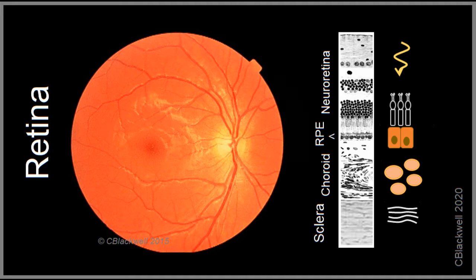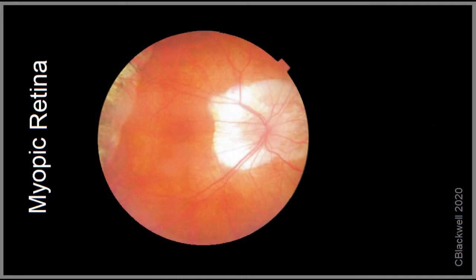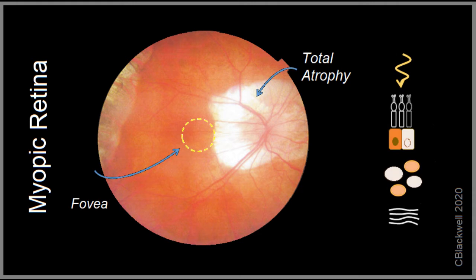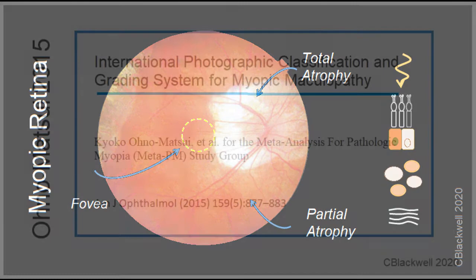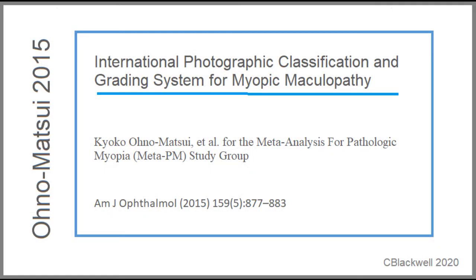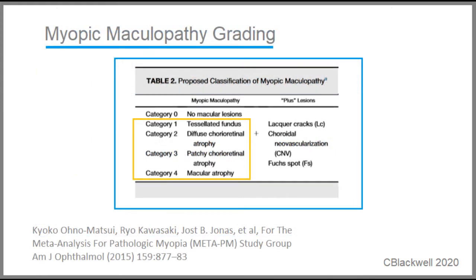When you look into a healthy eye, you see an even orange background from a combination of the RPE and the underlying choroid. Compare that nice young retina with a person who is myopic at minus 11 diopters: around the nerve there is total atrophy of the RPE and choroid, which is why you see through to the bright white of the sclera. In the rest of the macula, there is patchy yellowish color and subtle background red stripes — the RPE cells are fading away so you can see the blood vessels of the choroid.